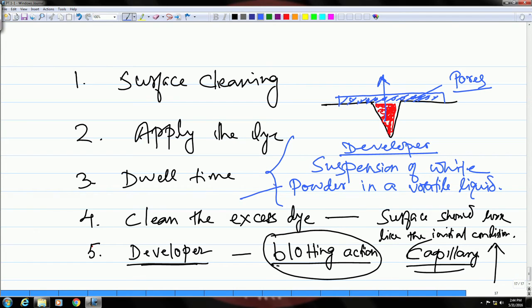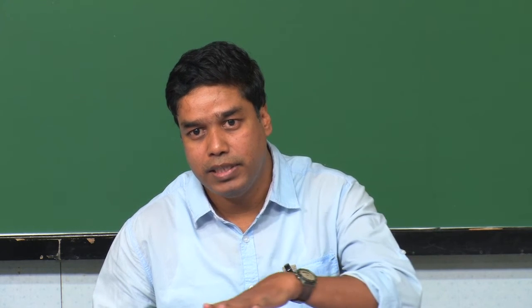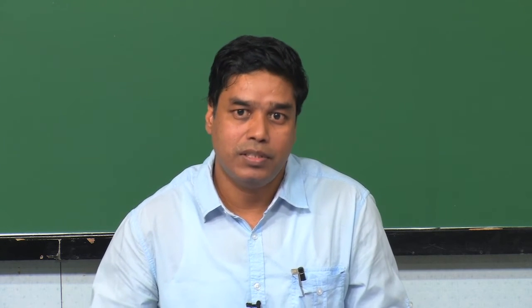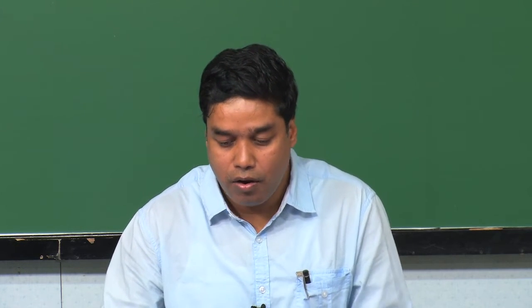This is a suspension of white-colour powder in a volatile liquid, applied through a spray can. The moment you apply it, the volatile liquid quickly evaporates, leaving behind a porous coating — that is the purpose of the volatile liquid: quick drying and creating porosity for capillary action. The white colour is chosen to contrast with the red colour of the dye. So the moment the developer dries, if there are flaws, you will see their indications as red lines on a white background, giving good visibility because the two colours are contrasting.